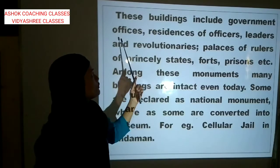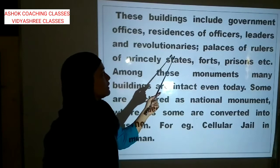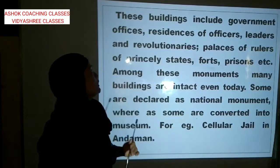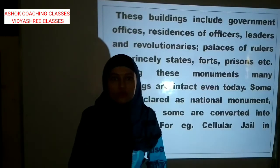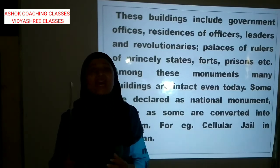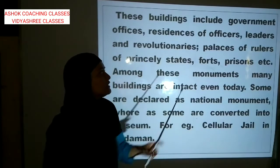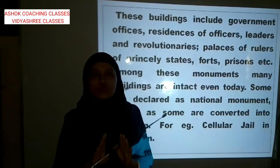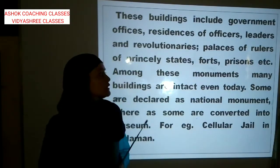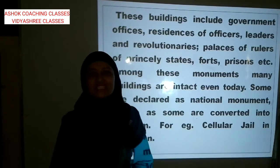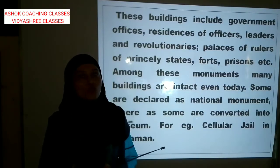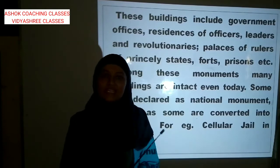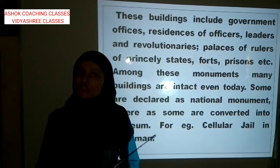These buildings include government offices, residences of officers, leaders and revolutionaries, palaces of rulers of princely states, forts, prisons, etc. In mein government ke offices, officers ke rehne ka residence — yahan par officers rehte the — ye leaders, ye revolutionaries jo rehte the unka ghar, that is also considered a material source. Then palaces of rulers of princely states — raja maharajaon ka jo palace, jo mahal hota hai, wo bhi material source hai. Then forts and prisons bhi important material source hain.